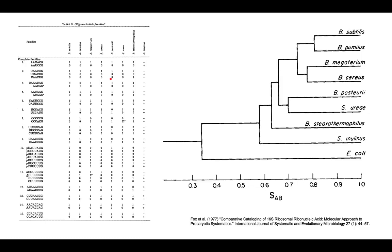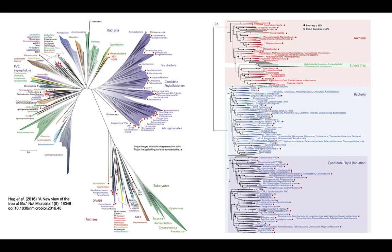I've just skipped several decades of sequencing technology improvements, but here's kind of where we are now — using more modern multi-gene phylogeny and comparative genomics approaches. Here are all of our eukaryotes, our various archaea, and then this big blob are the bacteria and the new bacterial clade, the candidate phyla radiation.